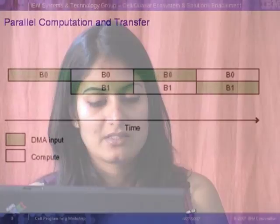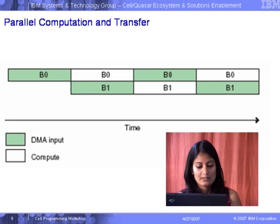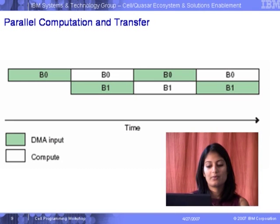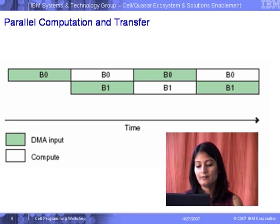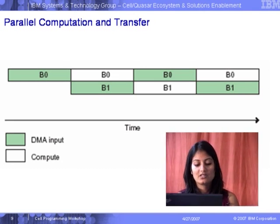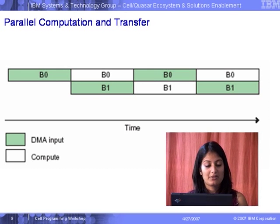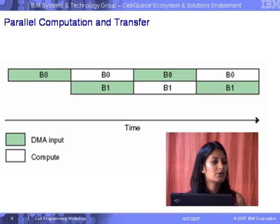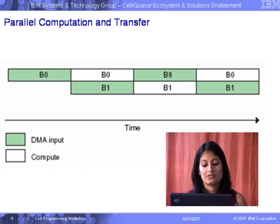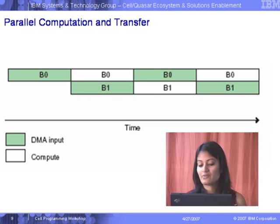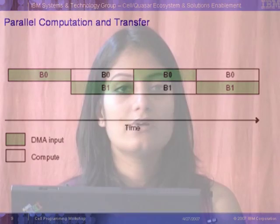In the diagram: first, initiate the DMA transfer to buffer B0, then initiate the DMA transfer to buffer B1. Wait for the transfer to B0 to complete, use that data in B0, and initiate the next DMA transfer to B0. Then wait for the transfer to B1 to complete and use the data in B1.